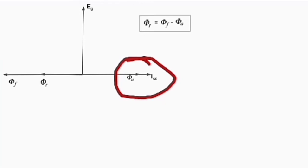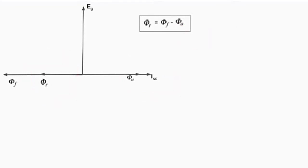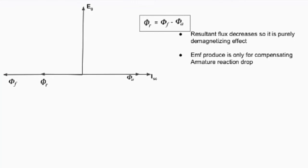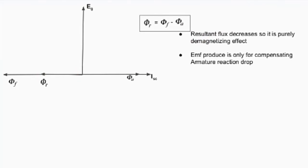From the equation: φr = φf − φa, meaning the resultant flux is reduced — the value of resultant flux decreases. Resultant flux decreases, meaning this is a purely demagnetizing effect. The EMF produced is only for compensating the armature reaction drop or demagnetizing effect.